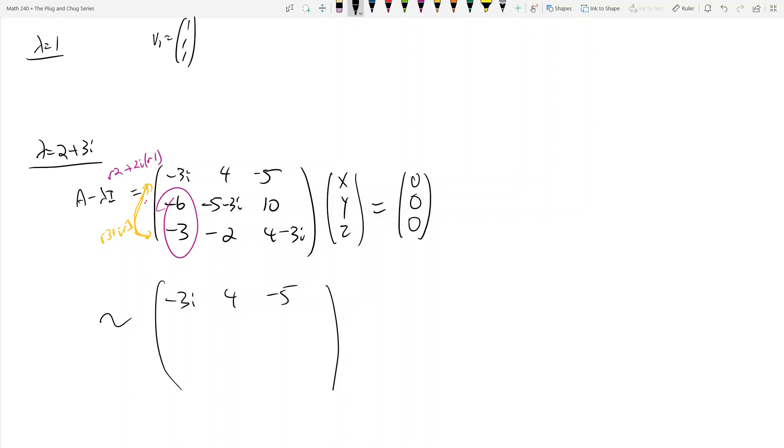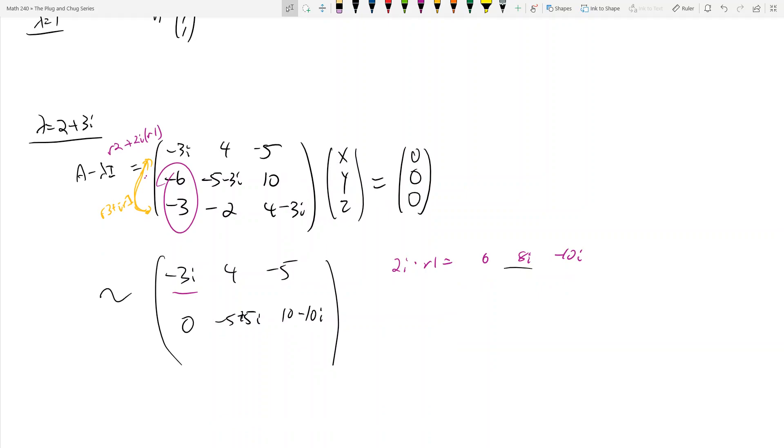Row 2 plus 2i times row 1: 2i times row 1 equals 6, 8i, -10i. Adding this to the second row gives 0, -5+5i, 10-10i. Row 3 plus i times row 1: i times row 1 is 3, 4i, -5i. Adding that to row 3 gives 0, -2+4i, 4-8i.